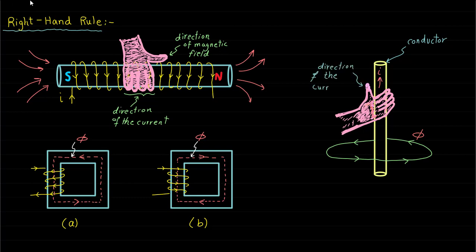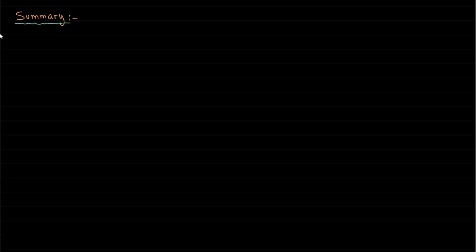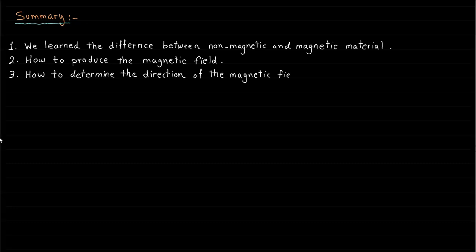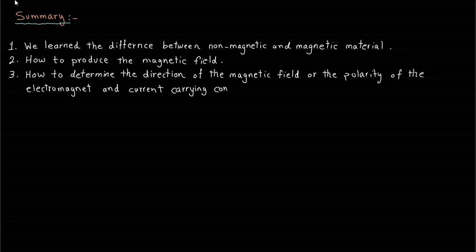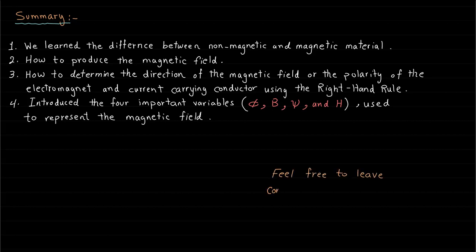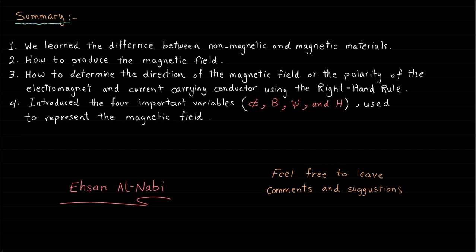Up to now, we learned how the magnetic field is produced and how its direction is determined. In the upcoming lectures, I will focus more on some basic equations and relationships related to the magnetic field and magnetic circuit. To summarize, in this lecture we learned the difference between non-magnetic and magnetic materials, how to produce the magnetic field, and how to determine the direction of the magnetic field or the polarity of the electromagnet and the current-carrying conductor using the right-hand rule. We also introduced the four important variables used to represent the magnetic field. Feel free to leave comments and suggestions. I am Ihsan al-Nabi and it was a pleasure sharing this lecture with you. Thank you.